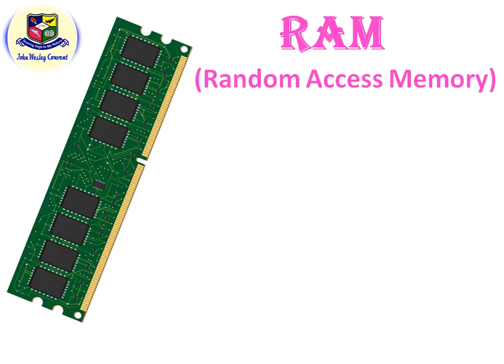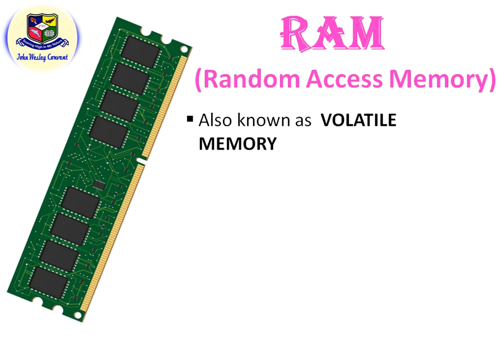Here we are having RAM and I am going to show you some features of it. As you can see, it is a green color chip placed here. The very first feature is that it is a volatile memory.